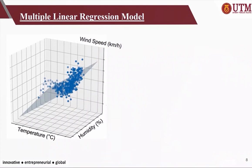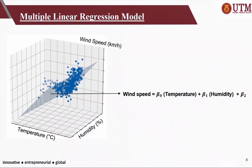In this project, a multiple linear regression model will be used. It is a type of linear regression model that consists of more than one input. Wind speed will be the output, while temperature and humidity will be the inputs of the model. The best fit of the 3D plot diagram will be a plane, represented by the equation shown on the right side of this slide. Beta 1 and Beta 2 will be the gradients indicating the change of wind speed according to changes in temperature and humidity, while Beta 0 will be the value of wind speed when temperature and humidity are both 0.